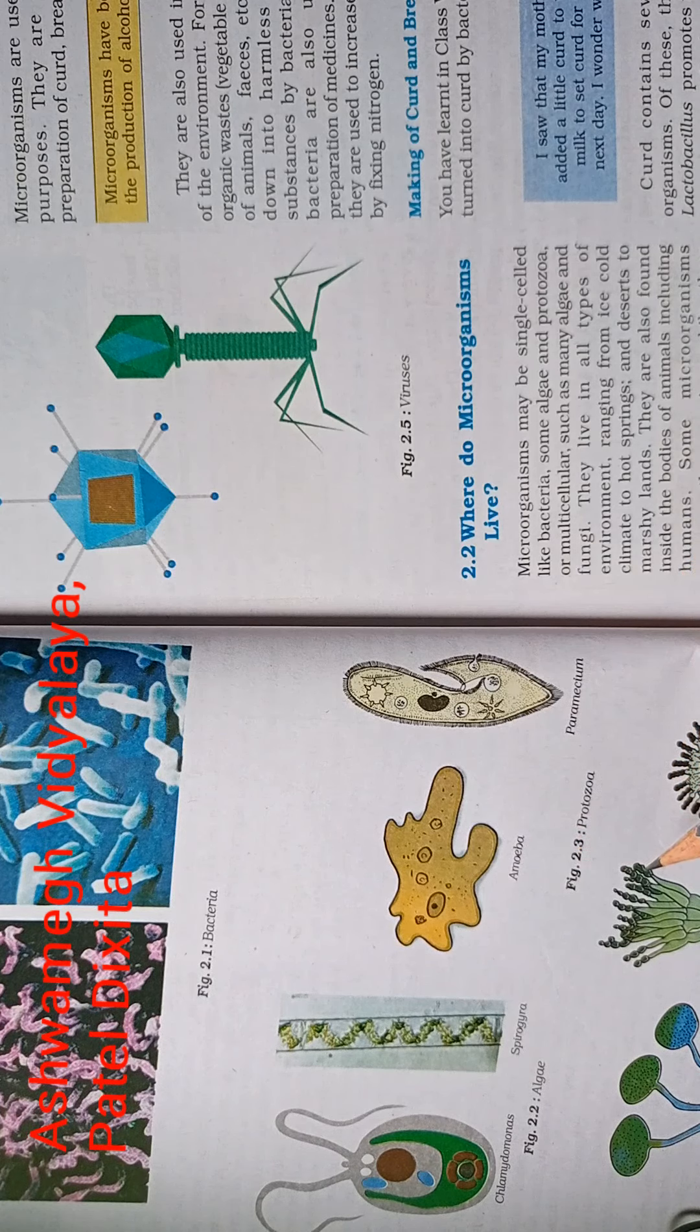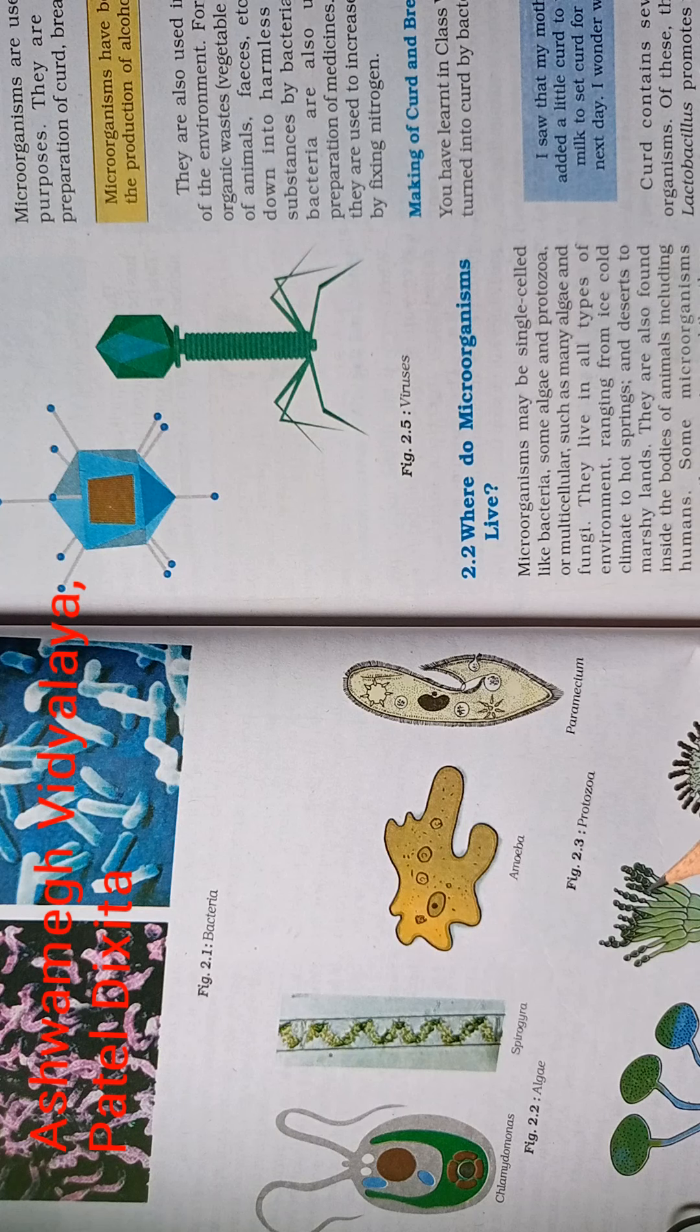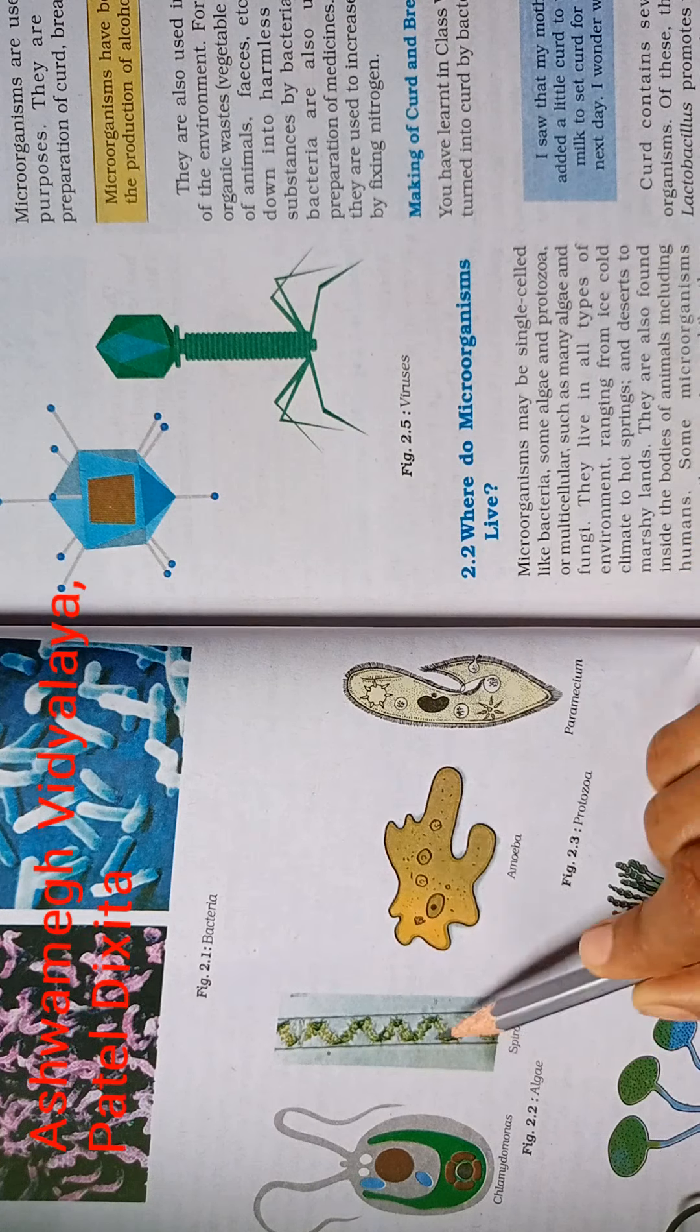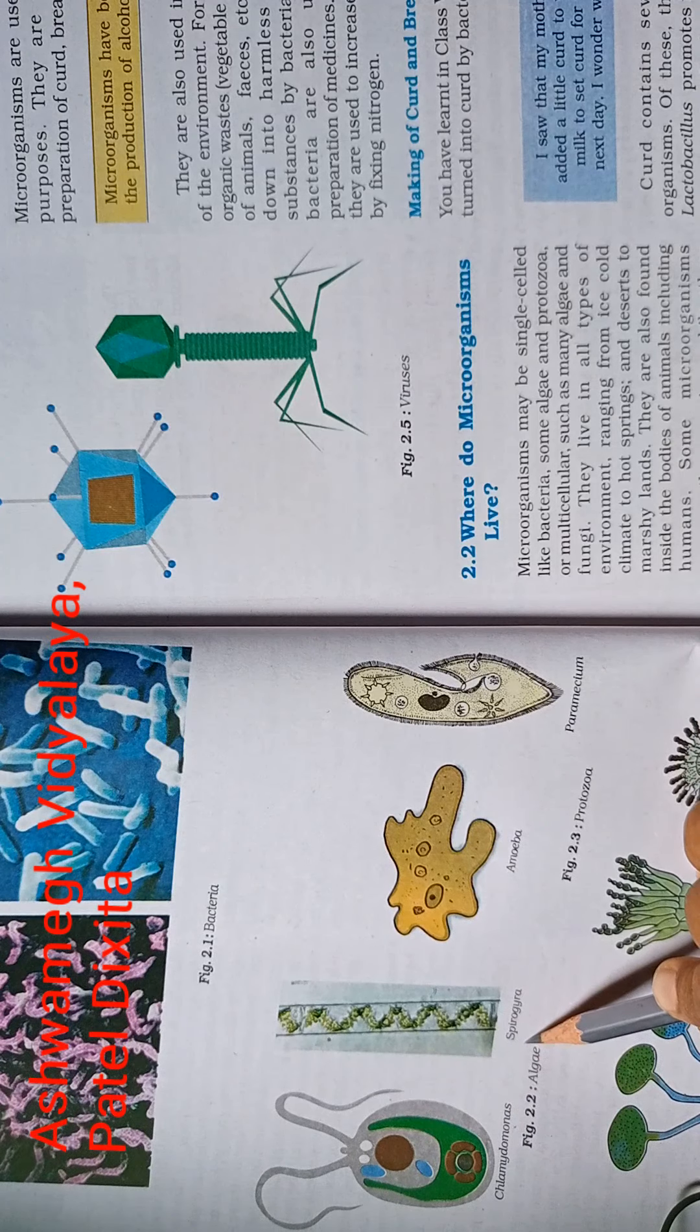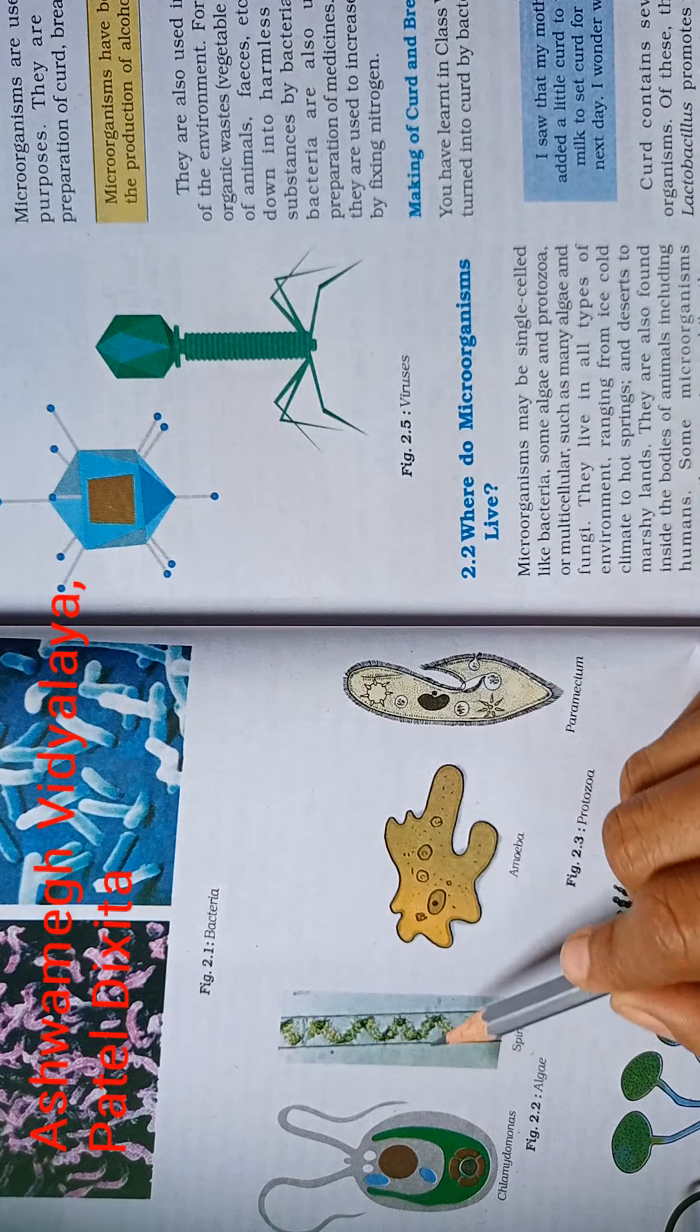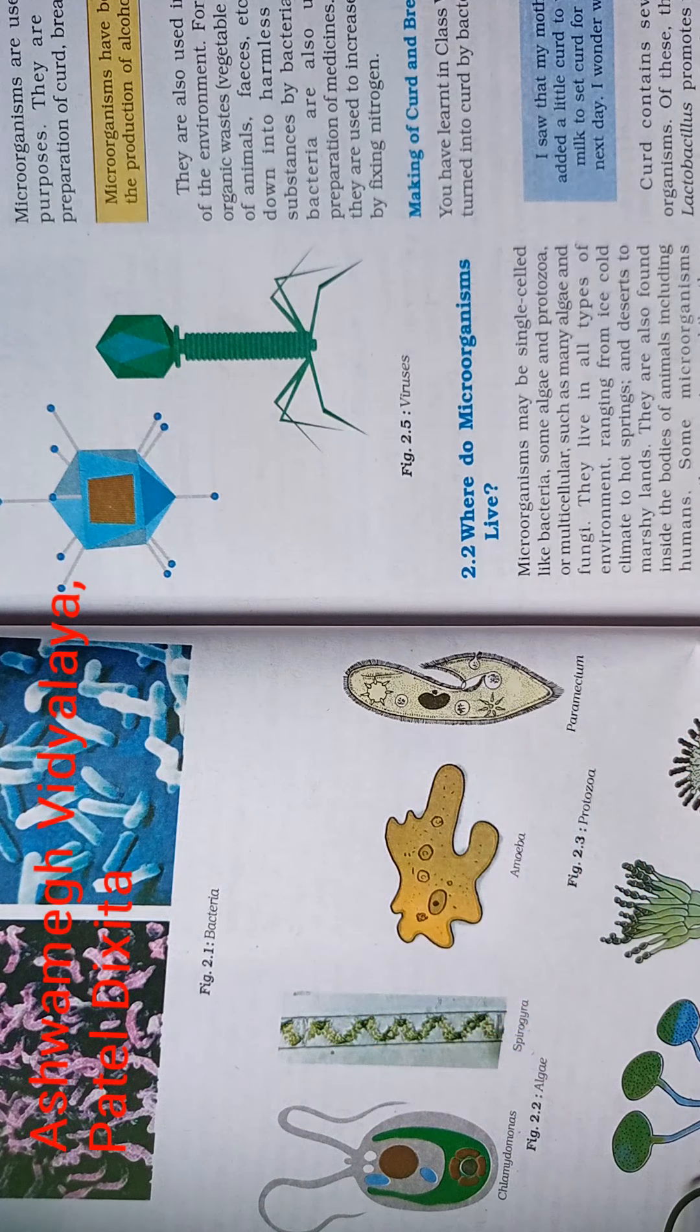Then we are discussing protozoa like amoeba and paramecium. Protozoa depends on some on else, means it is parasite and heterotrophic. Mostly aquatic means they are in water. Then we are discussing algae like chlamydomonas and spirogyra. Chlamydomonas is colonial and spirogyra is filamental, it means it is a filament.